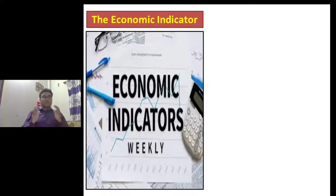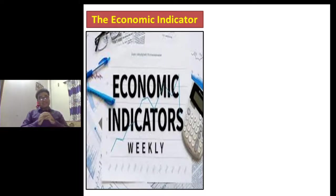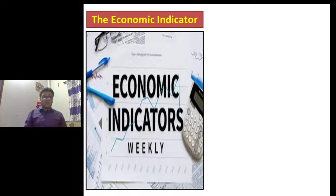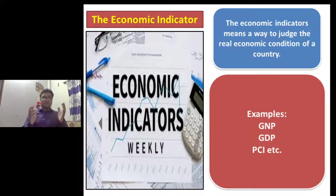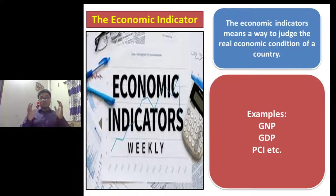I am going to discuss about the economic indicator. What is called an economic indicator? Basically, an economic indicator is the way to know the real economic condition of a country. The economic indicator means a way to judge the real economic condition of a country. For example, GNP or Gross National Product, GDP or Gross Domestic Product, PCI or Per Capita Income, etc., are called the economic indicators, because by which we can know the real economic condition of a country.